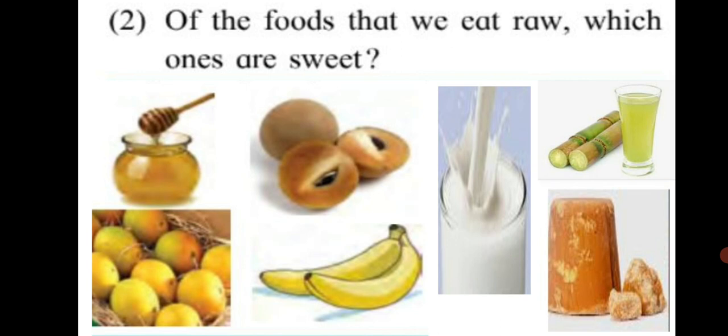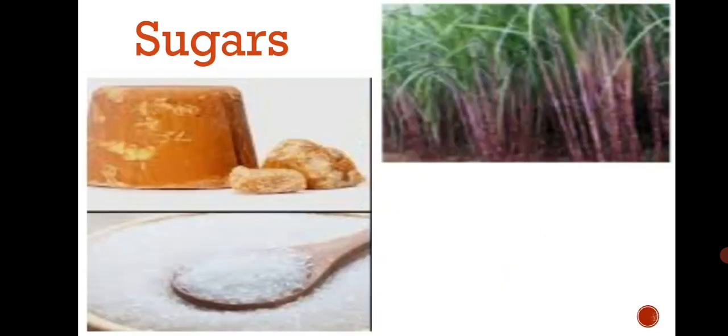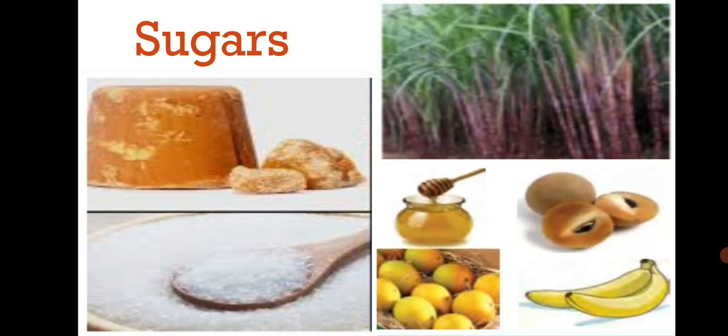Now, let's learn about sugars. In carbohydrates, we learnt about starch. Now, other part of carbohydrates are sugars. Foodstuffs that taste sweet contain different kinds of sugars. For example, we can obtain jaggery and table sugar from sugarcane because it contains a sugar called sucrose. Ripe fruits like mango, banana, chiku as also honey and milk also contain various kinds of sugars. They too give us energy.